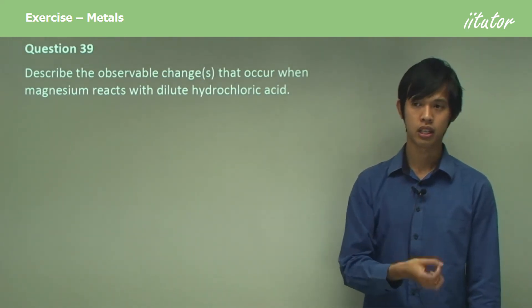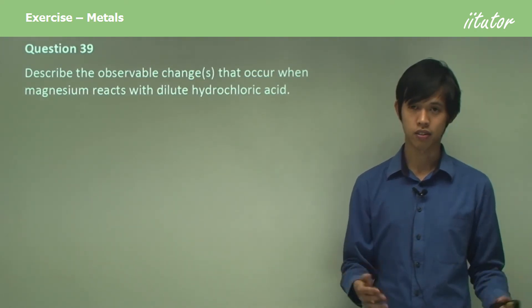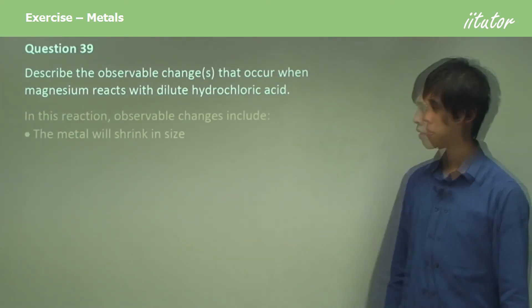The metal is disappearing. Bubbles are being formed. They can see that, but they won't know anything else. That's what an observable change is. In this reaction, observable changes include: the metal will shrink in size.